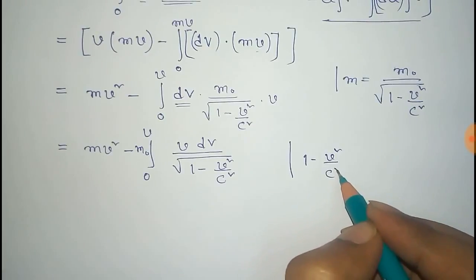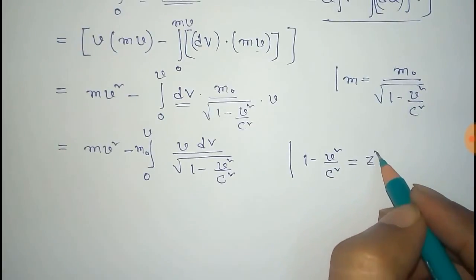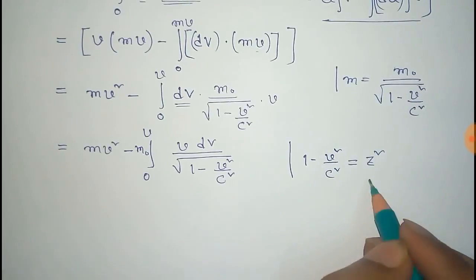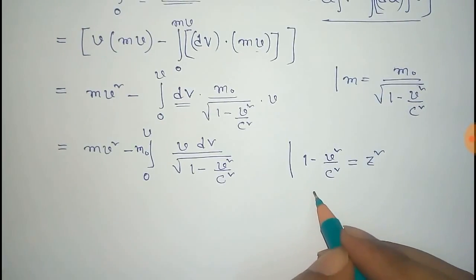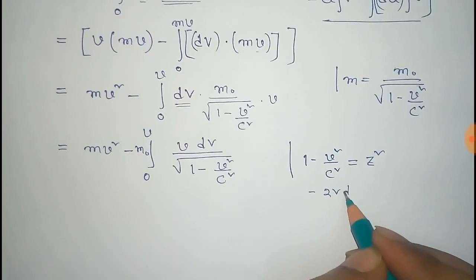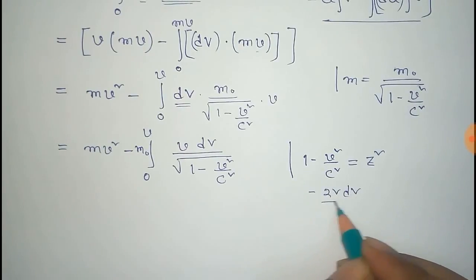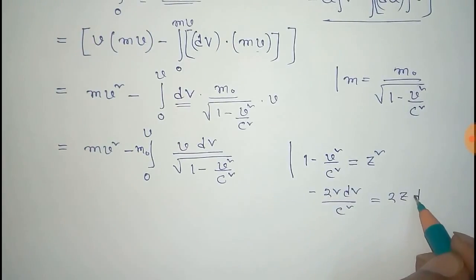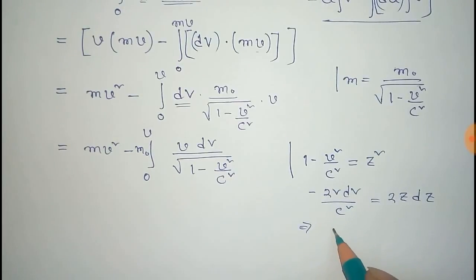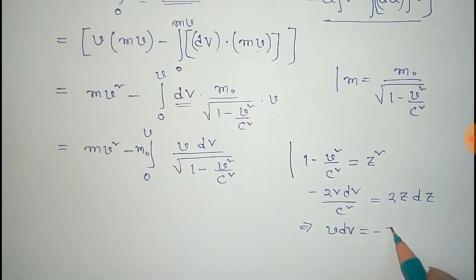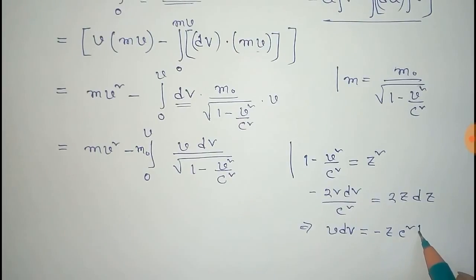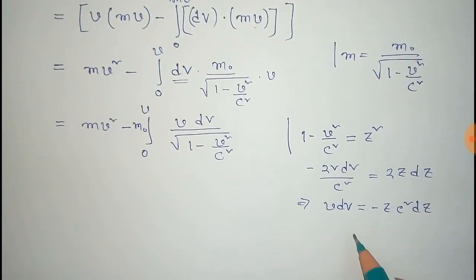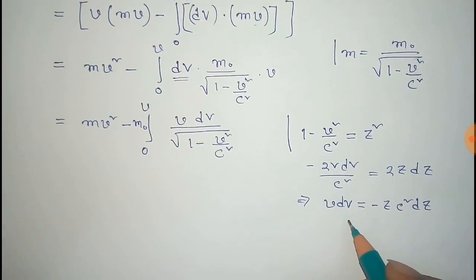To evaluate this integral, we use the substitution z² = 1 - v²/c². Differentiating, we get minus 2V dV over c² equals 2z dz, so V dV equals minus z c² dz.